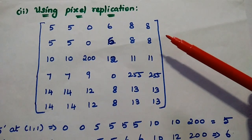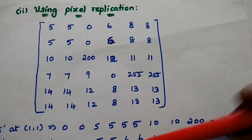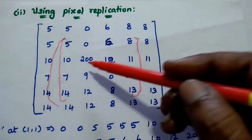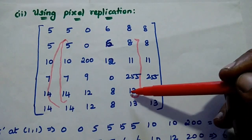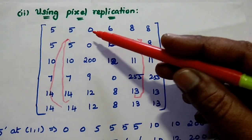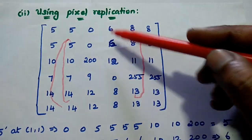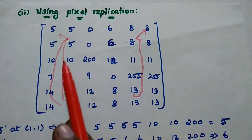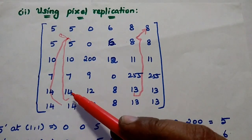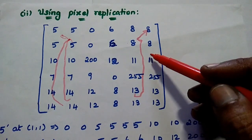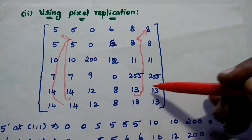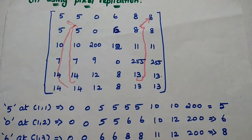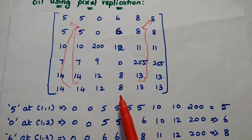Next we are going to perform the median filtering concept using the pixel replication method. In this method, the given image segment is: 5, 0, 6, 8, 10, 200, 12, 11, 7, 9, 0, 255, 14, 12, 8, 13. Pixel replication means the top row is replicated with the same values — 5, 0, 6, 8. The bottom line repeats the same row: 14, 12, 8, 13. The first and last rows and first and last columns are all replicated. By doing this method we can remove both salt and pepper noise.